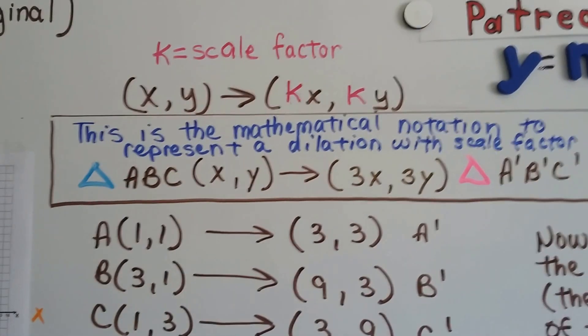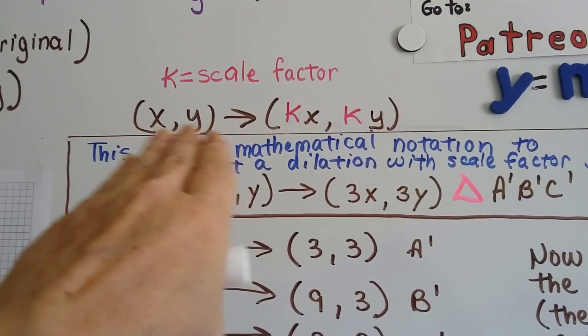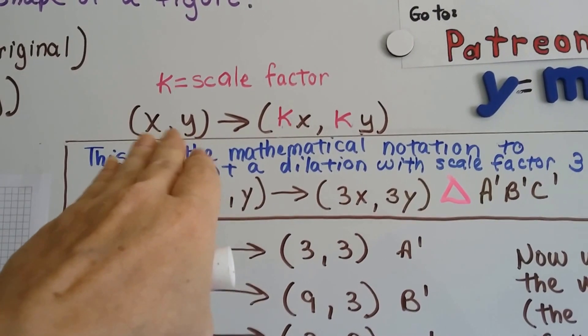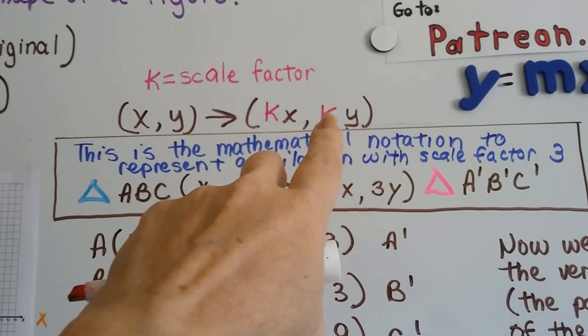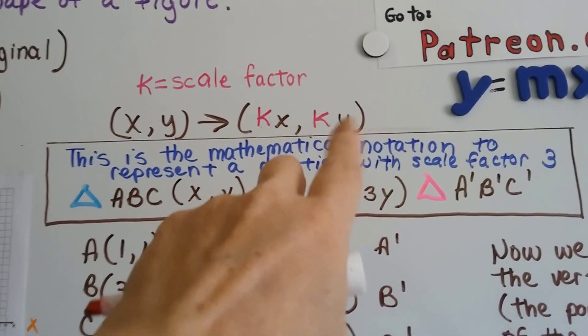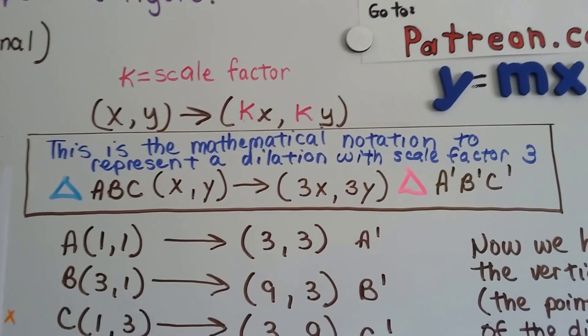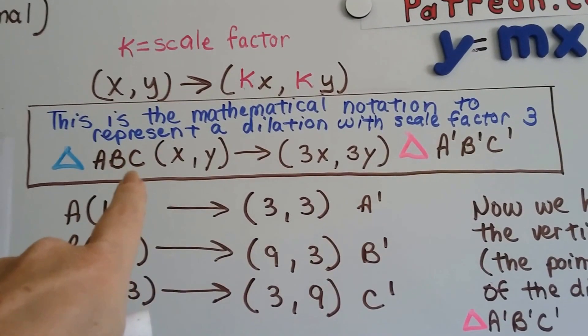The scale factor is represented by k. We can write it as (x,y) for the x,y values in parentheses with an arrow, and then k for the scale factor times x, and ky as the scale factor times y. This is the mathematical notation to represent a dilation with a scale factor of 3.